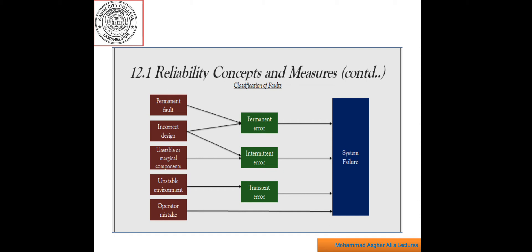These are sources of a significant number of errors, as statistics further in this section demonstrate. The relationship between various types of faults and failures is given in the figure. This shows the different types of faults: permanent fault, incorrect fault, unstable managerial component, unstable environment, and operator mistake — all distinguishing into permanent, intermittent, and transient errors.